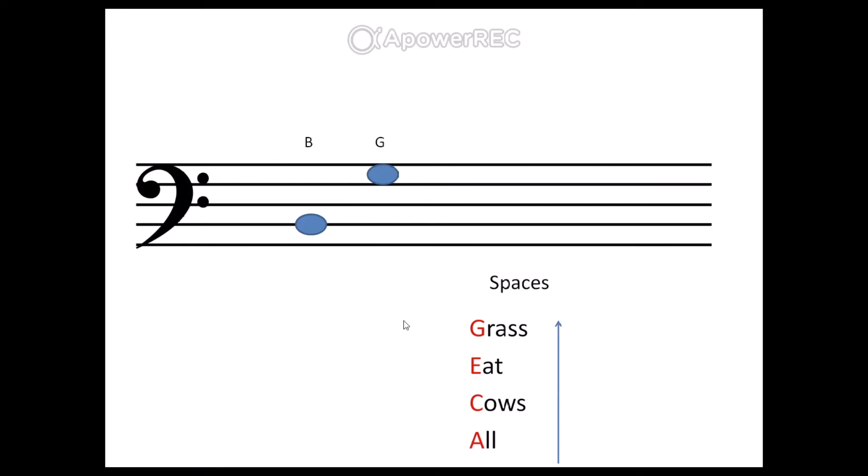Let's try one more. This note. First of all, is it on a line or in a space? I can see that it's squashed between the bottom two lines this time, so it must be in a space. Think back to our spaces rhyme: All Cows Eat Grass. What note do you think this one is? That's right, it's an A.